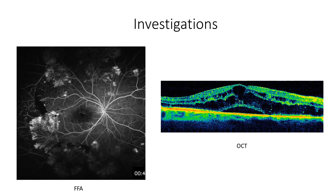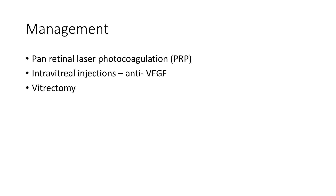The investigations commonly done are FFA and OCT. FFA is a test in which a fluorescent injection is injected into an arm vein and pictures of the retina are taken to see the blood supply and any leaking blood vessels. OCT is a simple scan done to see the macula in 3D. The management of diabetic retinopathy is with pan-retinal laser photocoagulation, intravitreal injections of anti-VEGF, and vitrectomy surgery.